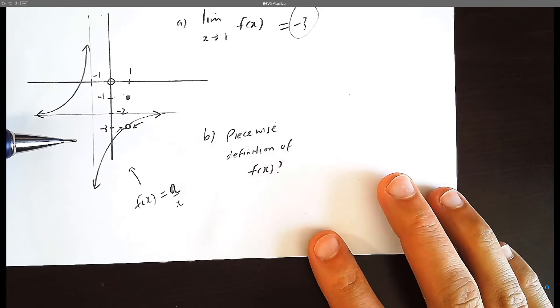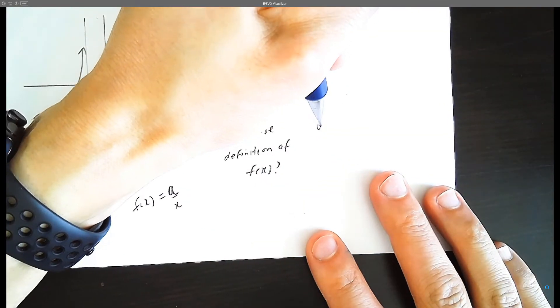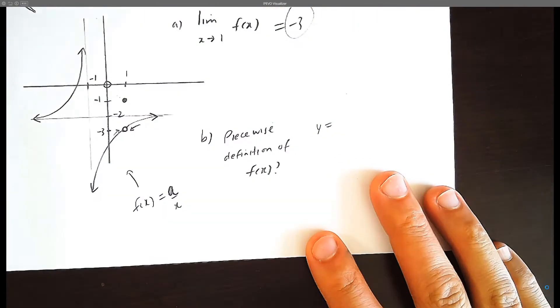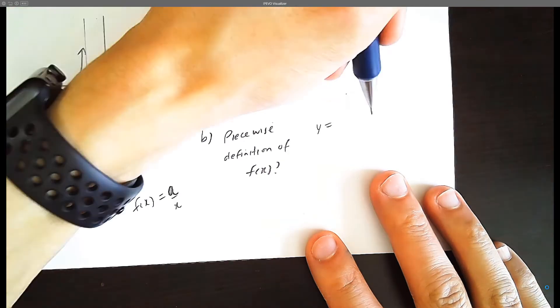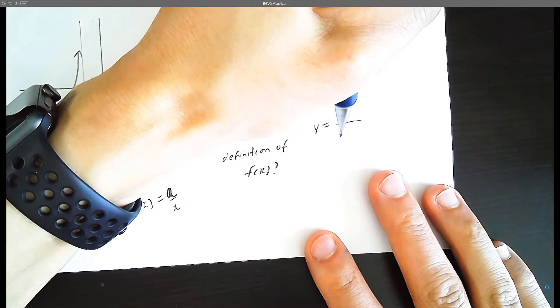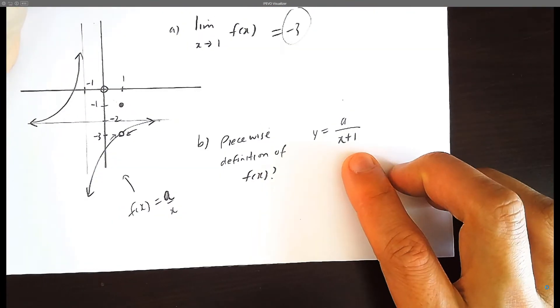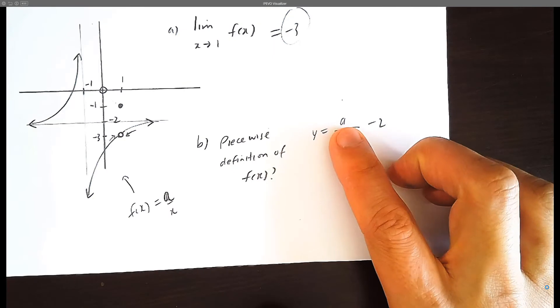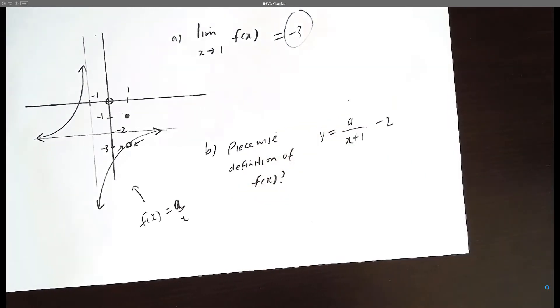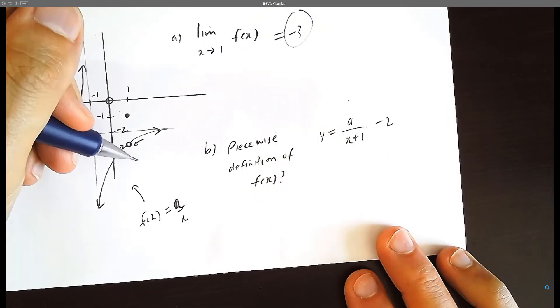So let's just practice this function here. We're going to assume the function is y equals 1 left 2 down. So it's going to be 1 left would be x plus 1. We're just practicing function transformations now. And 2 down would be minus 2. We're not sure what a is, but what coordinate do we know for sure goes through this function?